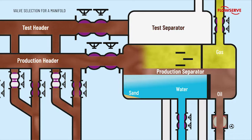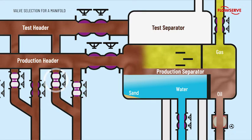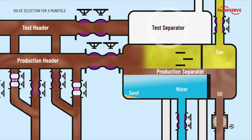To begin the process for testing a specific well, its flow line valve to the production header is closed, and its flow line valve to the test header is opened. The quality of the well fluid is measured and inspected through the test separator.